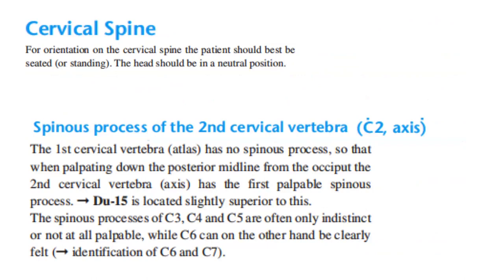Spinous process of the second cervical vertebra: the first cervical vertebra, the atlas, has no spinous process, so that when palpating down the posterior midline from the occiput, the second cervical vertebra, the axis, has the first palpable spinous process.